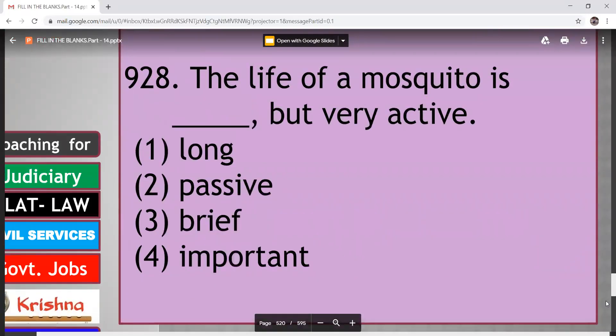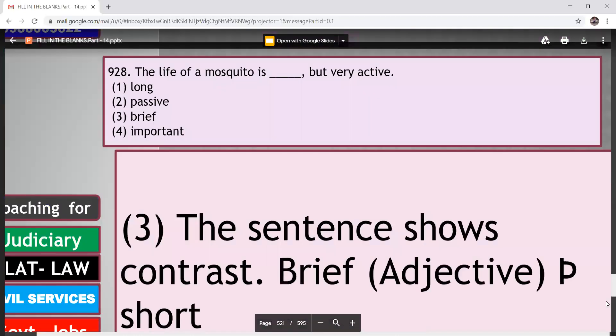Next. The life of a mosquito is dashed, but very active. Long, passive, brief, important. So here answer is, here the contrast shows. Contrasted objective is brief. So here the answer is third option. The life of a mosquito is brief, but very active.